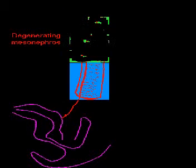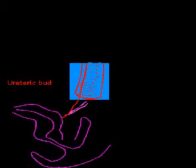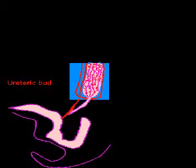The next real system is the metanephros, which forms below the mesonephros at the sacral region. A ureteric bud then grows out of the caudal part of the mesonephric duct and grows into the metanephros. It consolidates itself and becomes the definitive kidney, complete with circulatory and tubular parts.